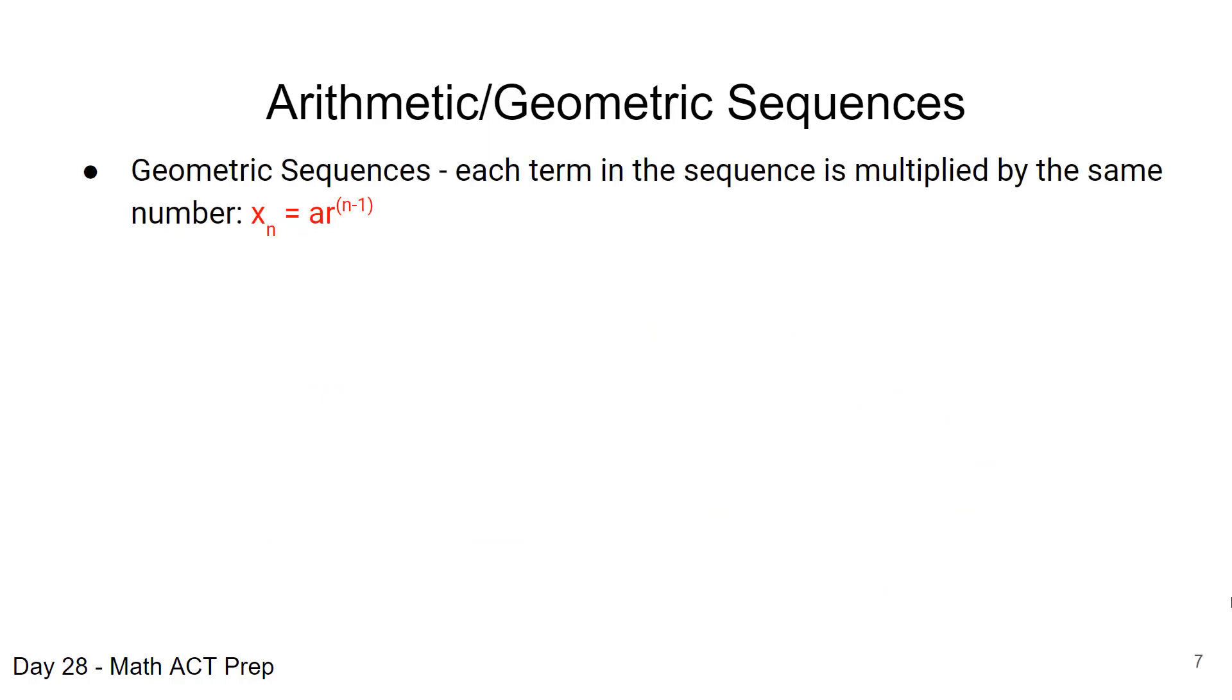Now let's take a look at our geometric sequences again. Remember to find a geometric sequence we're going to multiply by the same number and here is our formula for this. If we're looking for the term x sub n, we're going to set that equal to our original value a and we're going to multiply that by r, which is our common term, raised to whatever order of the term we are in, n minus 1 of that.